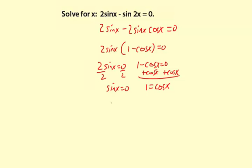So angles for sine of x equals 0, we have 0 and pi. And then for cosine of x equals 1, we just have 0.